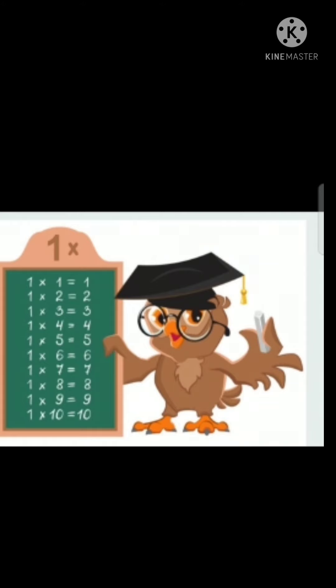One five is a five. One five is a five. One six is a six. One six is a six. One seven is a seven. One seven is a seven.